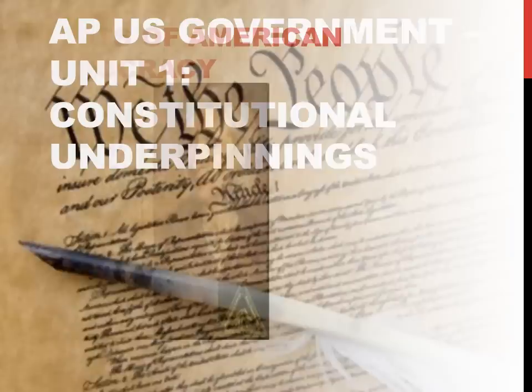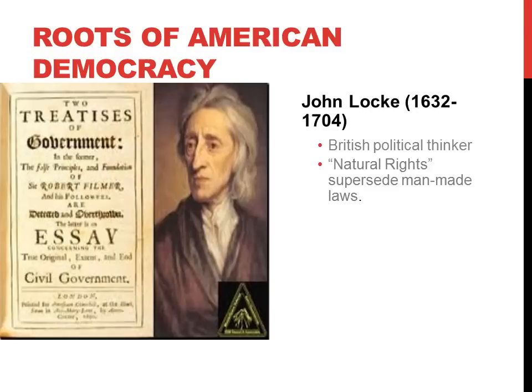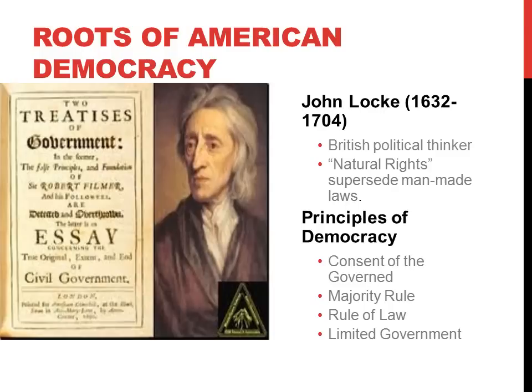The roots of American democracy stem back to the writings of early British political thinker John Locke. Locke emphasized his idea of natural rights — that some rights were just fundamental to humans and could not be superseded by man-made law. He outlined this in his famous works, including the Two Treatises of Government. Many principles of democracy come from thinkers like Locke, such as consent of the governed, majority rule, government responding to its people through the rule of law, and the idea that government powers should be limited.